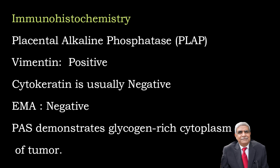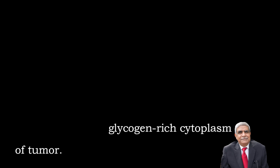Immunohistochemistry: Placental alkaline phosphatase (PLAP) and vimentin are positive. Cytokeratin is usually negative. EMA is negative. PAS demonstrates the glycogen-rich cytoplasm of the tumor.